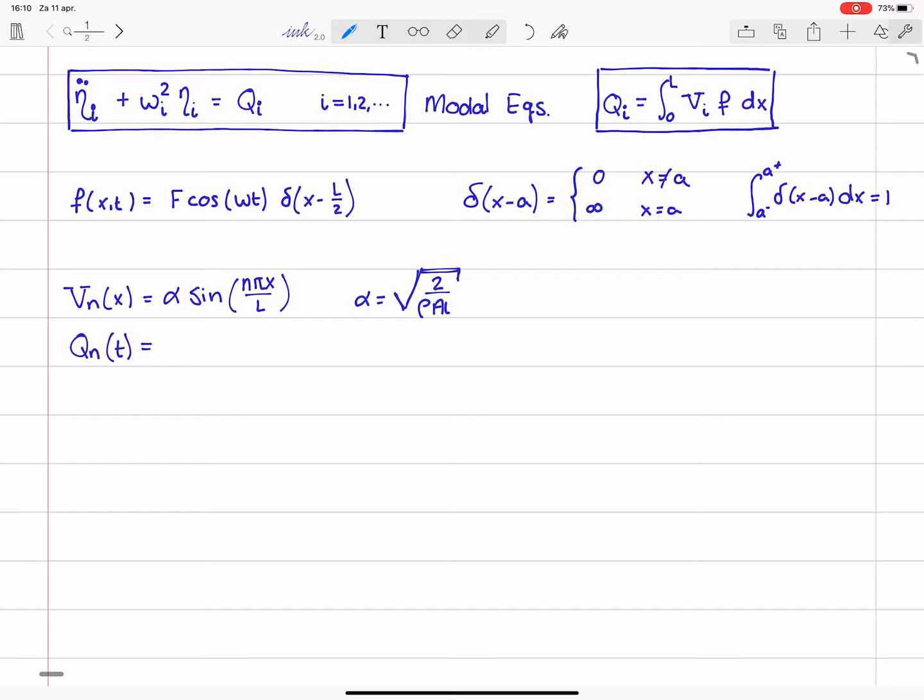equals f times alpha times the integral from 0 to L of the mode shape, so sine of n pi x over L times the Dirac function of x minus L over 2 dx times the cosine of omega t.